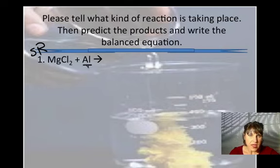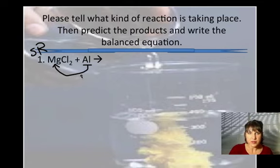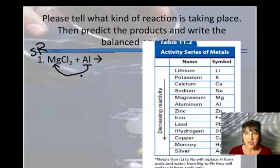So what we need to know is, can the aluminum replace the magnesium? Cations replace cations, and is the aluminum strong enough to replace the magnesium in this reaction? Well, we're going to need the activity series of metals to be able to predict this. So find aluminum and magnesium.